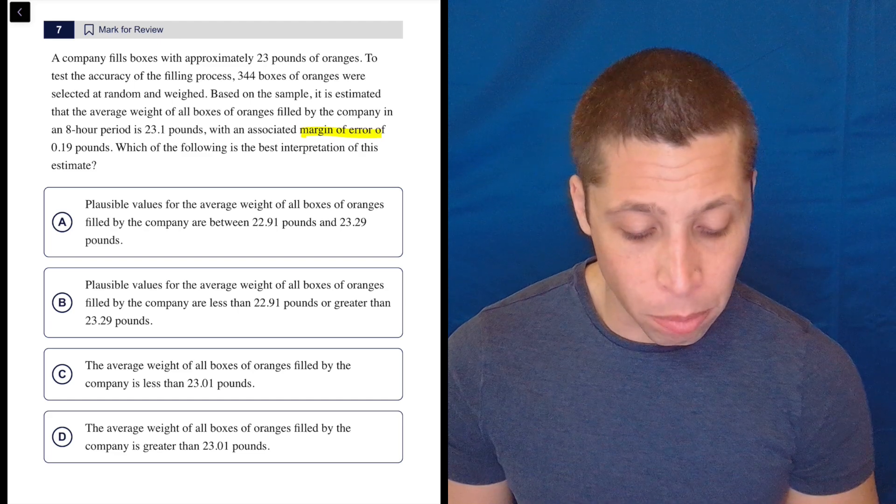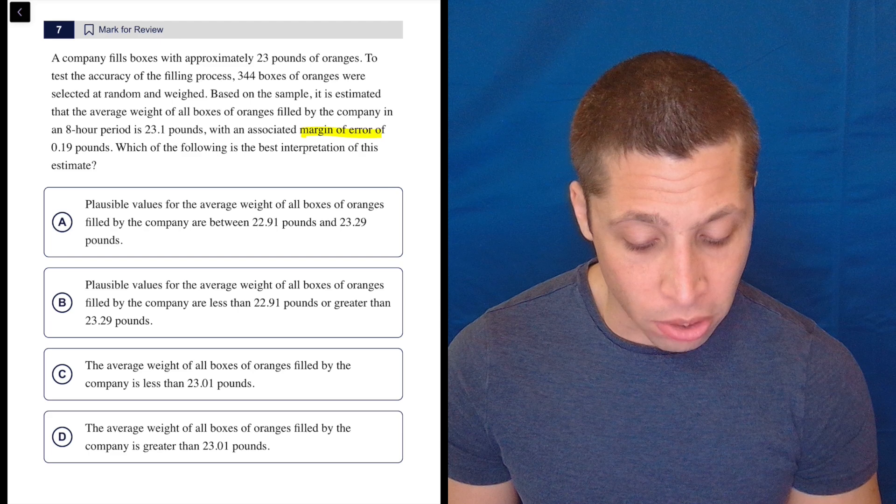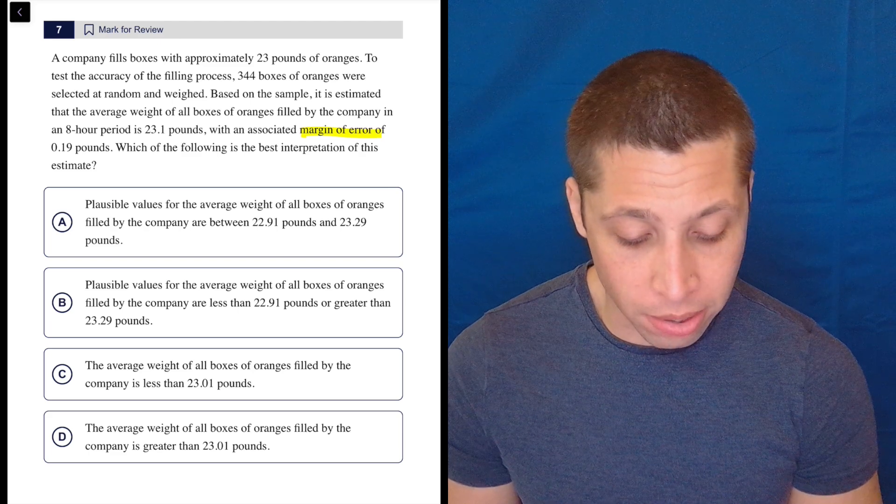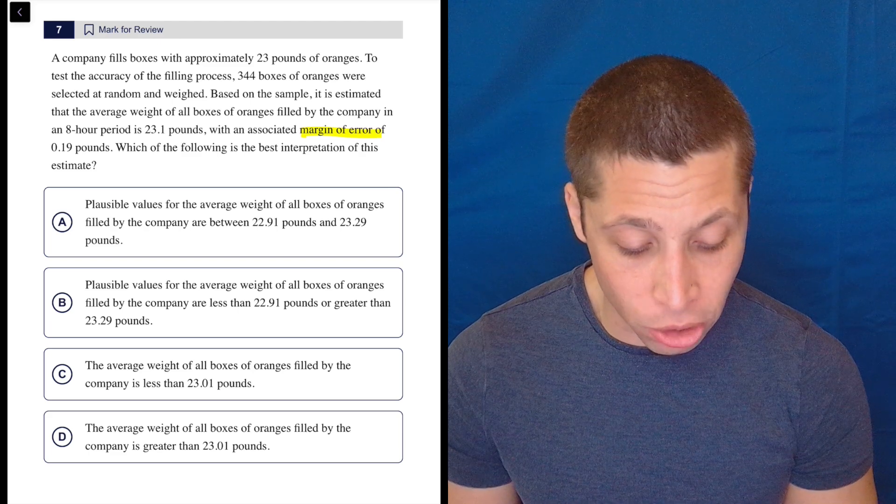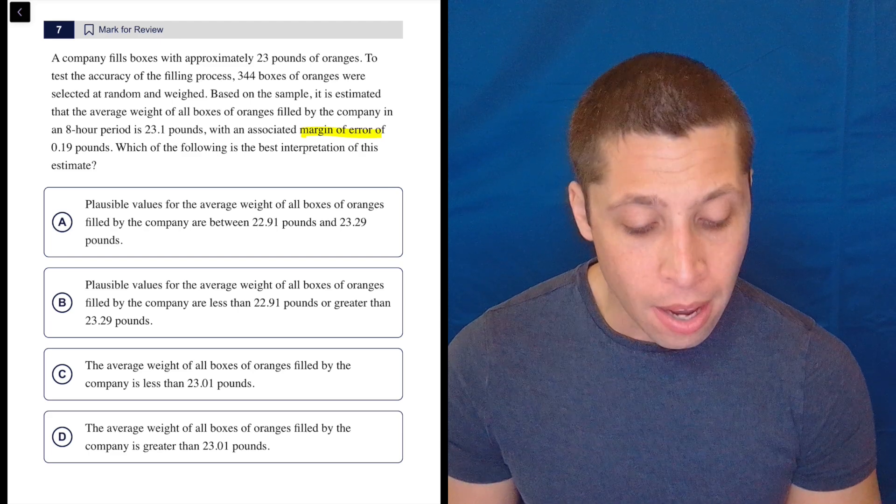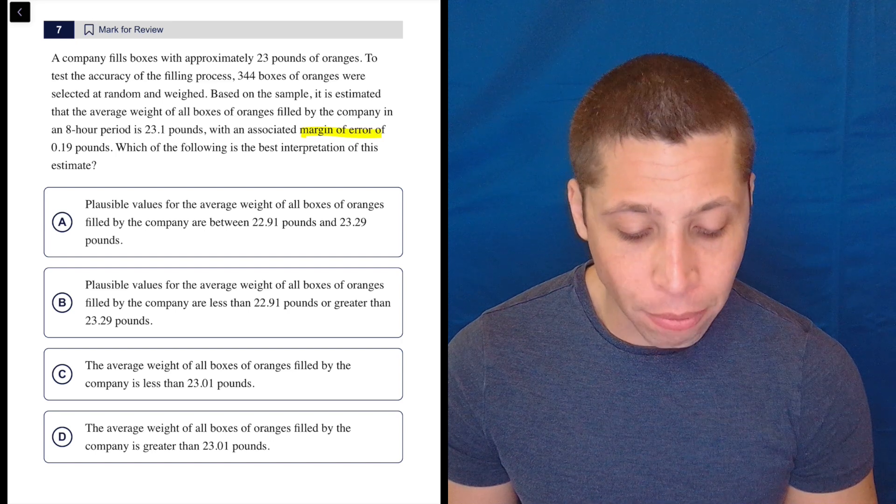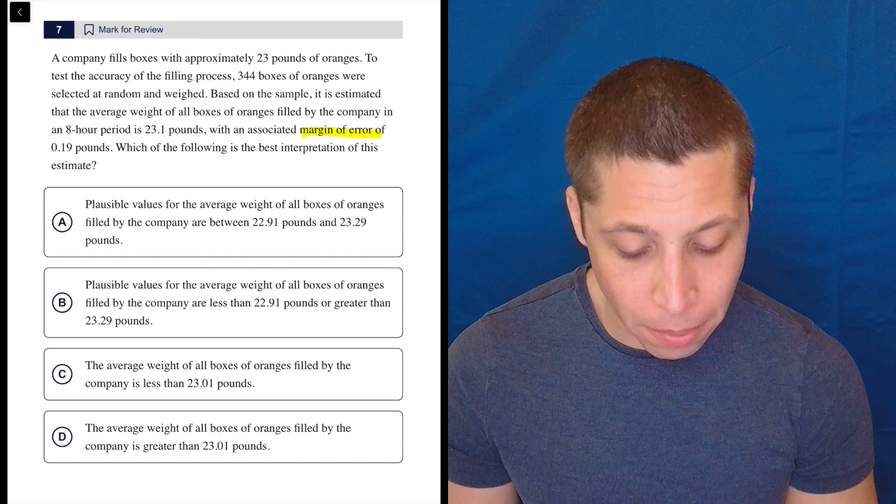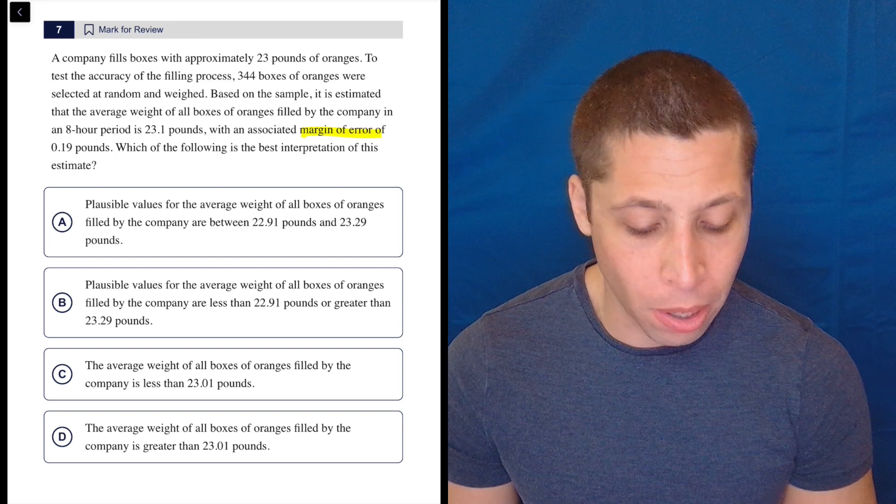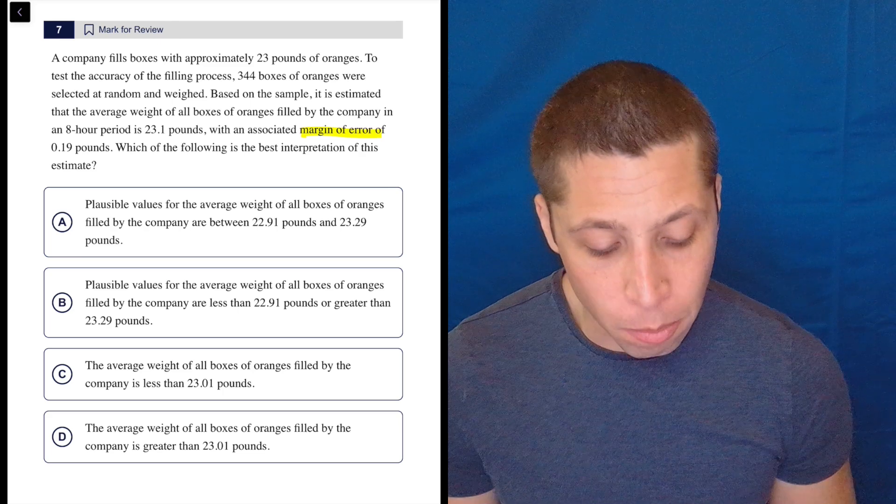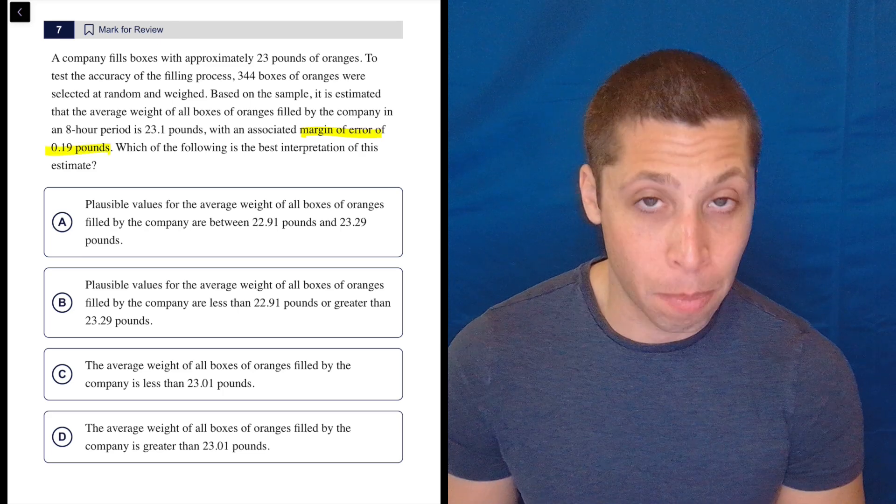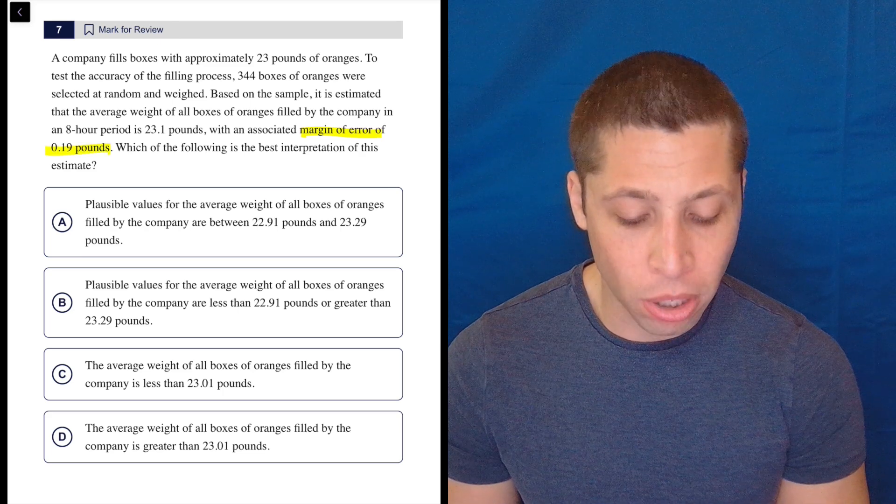A company fills boxes with approximately 23 pounds of oranges. To test the accuracy of the filling process, 344 boxes of oranges were selected at random and weighed. Based on the sample, it is estimated the average weight of all boxes of oranges filled by the company in an eight-hour period is 23.1 pounds with an associated margin of error of 0.19 pounds. Which of the following is the best interpretation of this estimate?